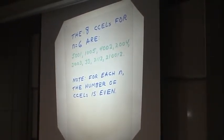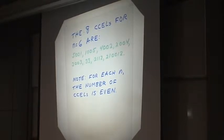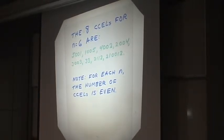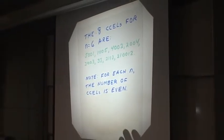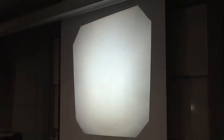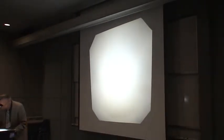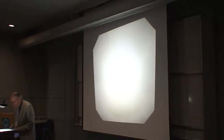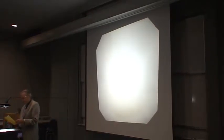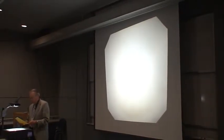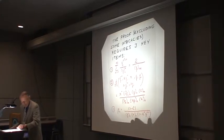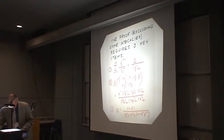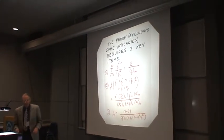The only partition you can't do this with is the empty partition of zero, and that is why it's the only one with an odd number of CCDLs. How does the proof go? Well, I'm not going to drag you totally through the proof — I will just give the highlights of what's happening.